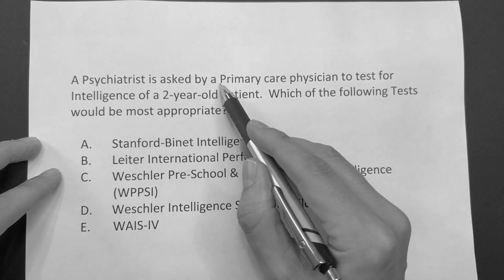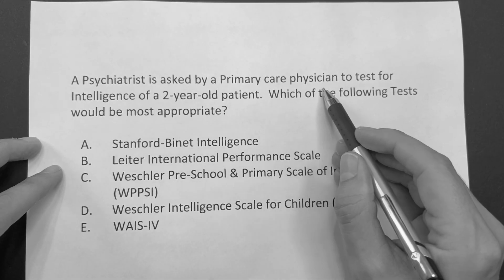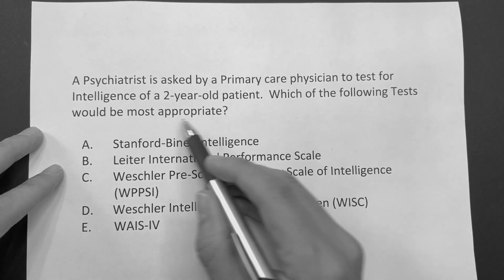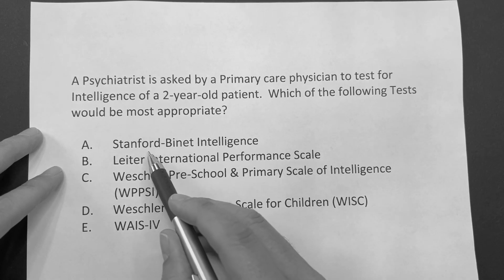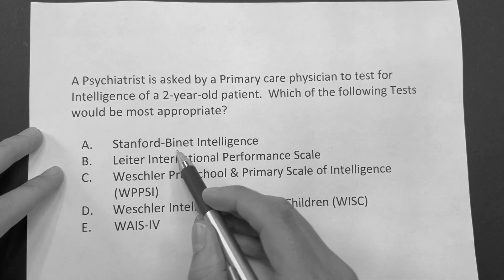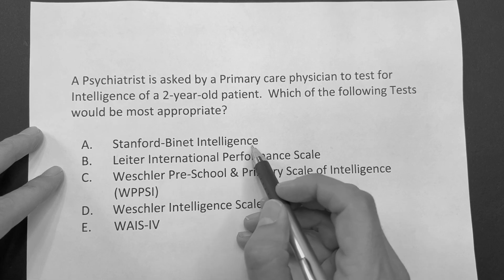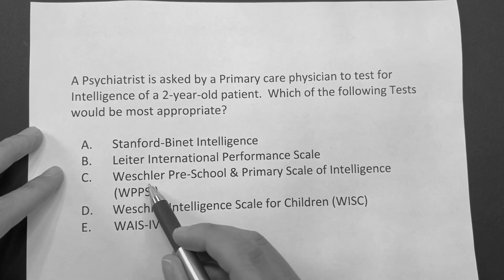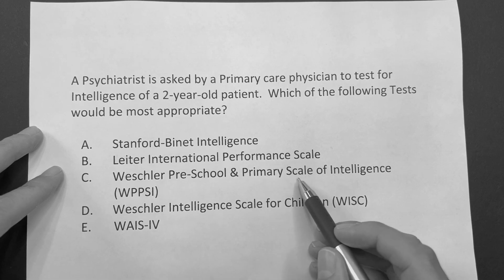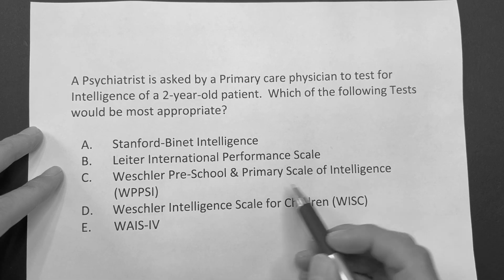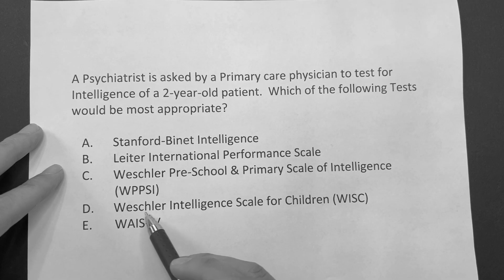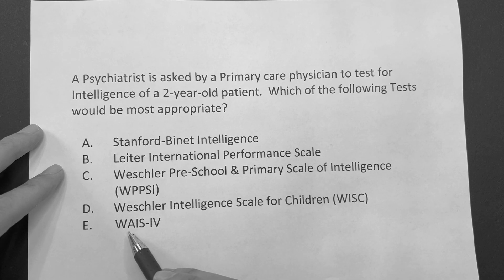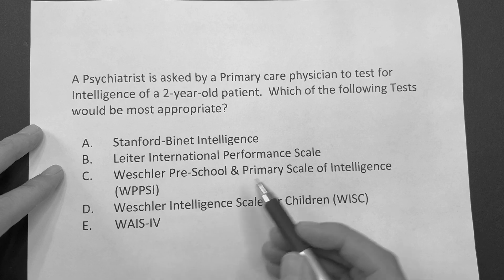A psychiatrist is asked by a primary care physician to test for intelligence of a two-year-old patient. Which of the following tests would be most appropriate? Is it A, the Stanford Binet Intelligence? Is it B, the Leiter International Performance Scale? Is it C, the Wechsler Preschool Primary Scale of Intelligence? Is it D, the Wechsler Intelligence Scale for Children? Or is it E, the WAIS test?